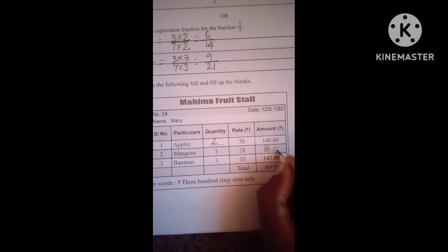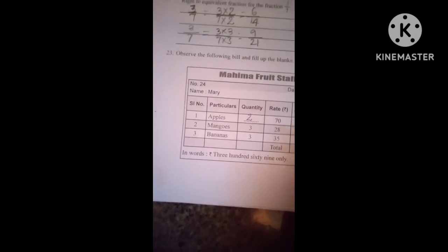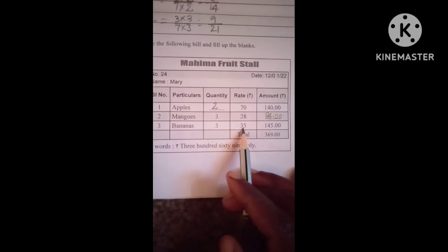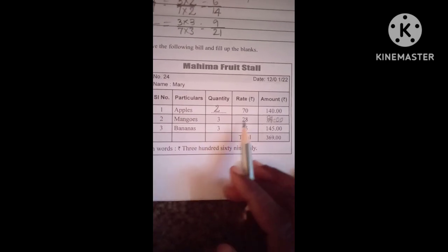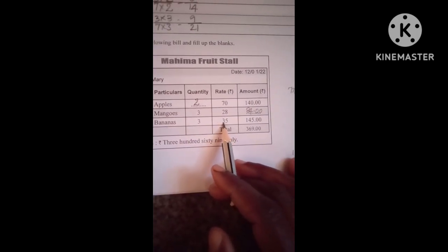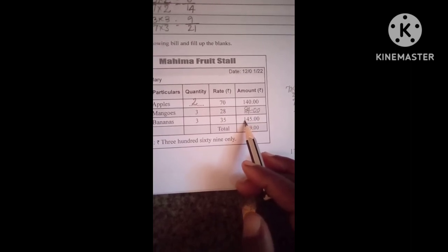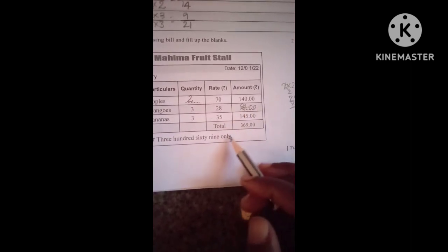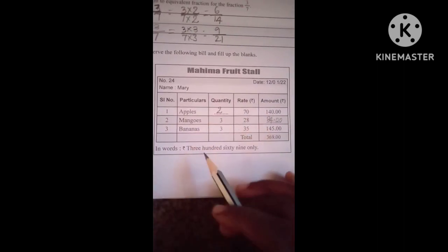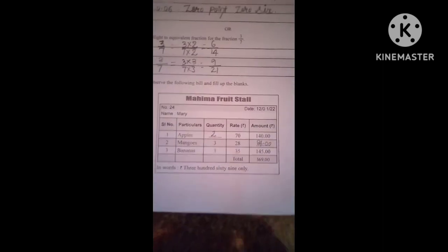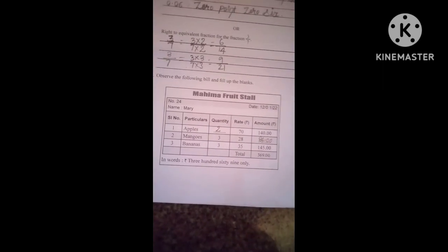Next they have given bananas: 3 kgs quantity, 1 kg is equal to 35 rupees. Totally 3 kgs amount is 145 rupees. Total amount also they have given. You can write only this much. Next question.